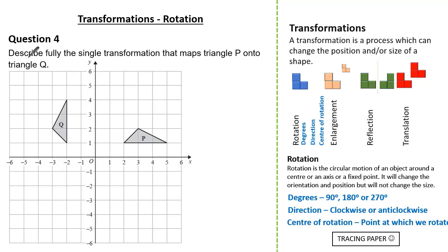Now let's look at describing. Here the question wants us to describe fully the single transformation that maps triangle P onto triangle Q. Remember if it's rotation we always must state the degrees, direction and the centre of rotation. Getting our tracing paper ready.